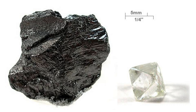Flake graphite is less common and of higher quality than amorphous; it occurs as separate plates that crystallized in metamorphic rock. Flake graphite can be four times the price of amorphous. Good quality flakes can be processed into expandable graphite for many uses, such as flame retardants. The foremost deposits are found in Austria, Brazil, Canada, China, Germany and Madagascar.